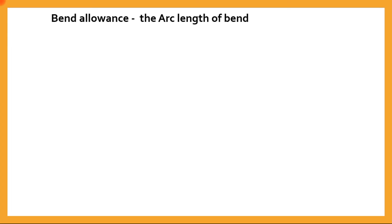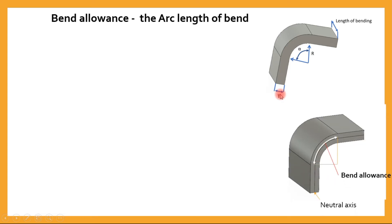Now let's have a look at how this bend allowance can be calculated for a bend based on the parameters we have seen earlier. These are the parameters: the length of bending, alpha is the angle of bending, R is the radius of bending, and T is the thickness. And this is the bend allowance which we need to calculate as the length of the arc.